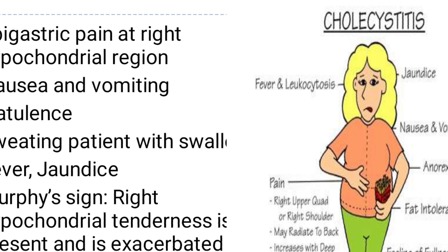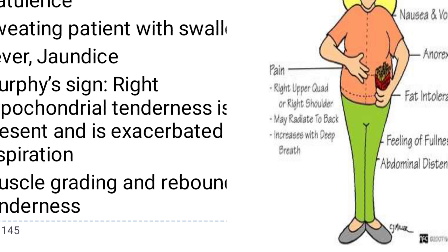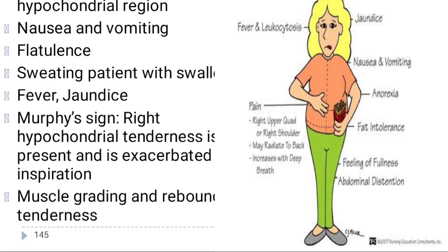Clinical manifestations include epigastric pain radiating to the right hypochondriac region, nausea, vomiting, flatulence, sweating, shallow breathing, fever, jaundice, and Murphy's sign — which is tenderness in the right hypochondriac area exacerbated on inspiration. Rebound tenderness may also be present.